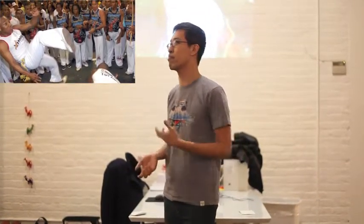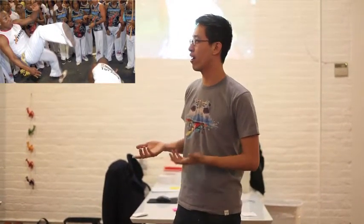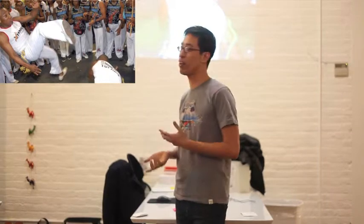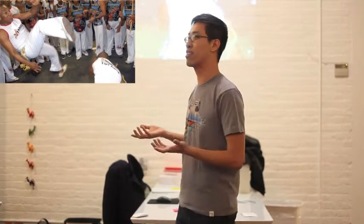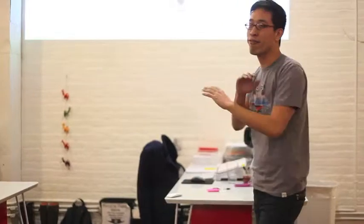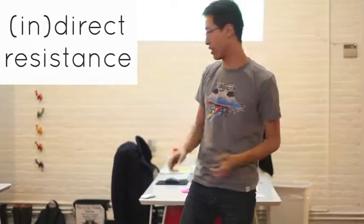Capoeira itself is blurry — it's a game, a martial art, a dance. Brazilian slaves hid their training of this martial art as a dance to fool the slave masters. Capoeira also emphasizes evasion: getting out of the way, ducking, doing different moves instead of blocking or direct confrontation. It's a kind of direct-indirect resistance. In this sense, an attack is a defense.